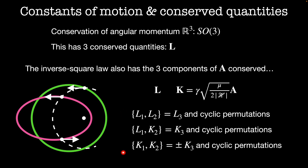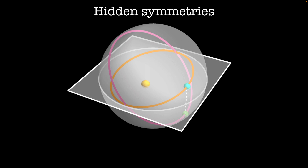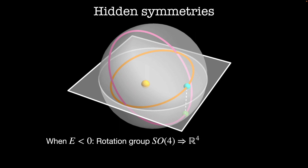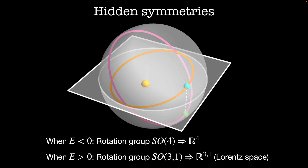It turns out that these relationships are the generators for rotational symmetry in four-dimensional Euclidean space. We started with a problem in 3D and found that it actually has a symmetry in four dimensions — that's pretty incredible. When the energy is negative, the symmetry group SO4 is the group of rotations in four-dimensional Euclidean space, with six independent parameters corresponding to the three components of the conserved angular momenta and the three components of the conserved Runge-Lenz vector. When the energy is positive, the symmetry group is SO(3,1), the group of rotations of Lorentz space. This is secretly the reason that all orbits from inverse square law systems are conic sections. This animation illustrates how one might get a conic section by projecting a higher-dimensional orbit into two dimensions.